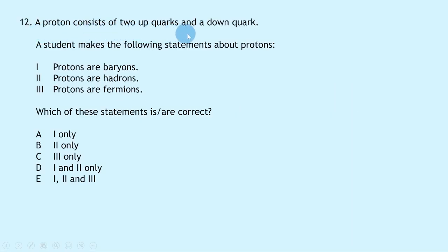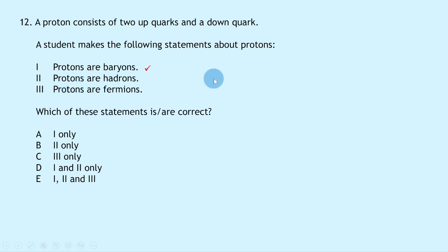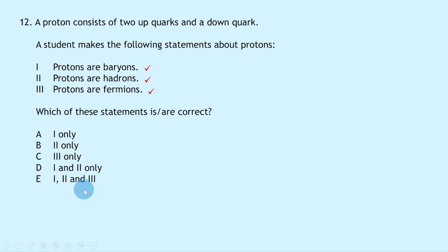Question 12: A proton consists of two up quarks and one down quark. Statement 1 — protons are baryons — is true, as baryons consist of three quarks. Statement 2 — protons are hadrons — is true, as hadrons are composite particles made of quarks. Statement 3 — protons are fermions — is true, as fermions are matter particles. All three statements are correct — answer E.